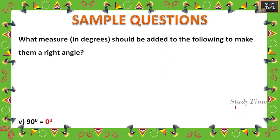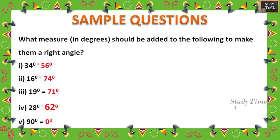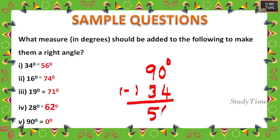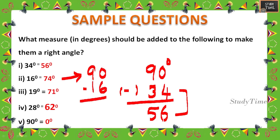Next, sample exam questions: What measure should be added to make a right angle? A right angle is 90 degrees. If given 34 degrees, subtract: 90 − 34 = 56 degrees, so 56 degrees should be added. For 16 degrees: 90 − 16 = 74 degrees. For 19 degrees: 71 degrees. For 28 degrees: 62 degrees. For 90 degrees: you do not need to add anything, so the answer is 0 degrees.